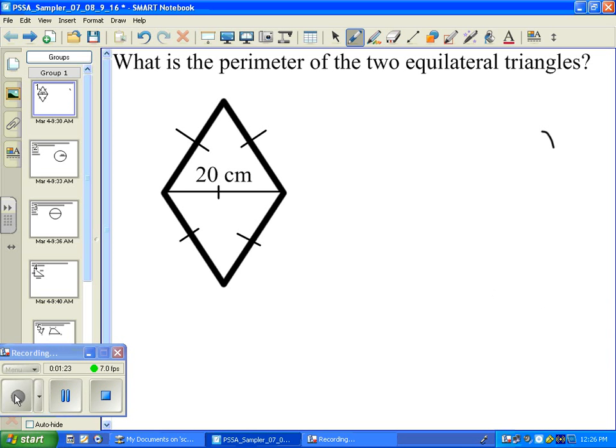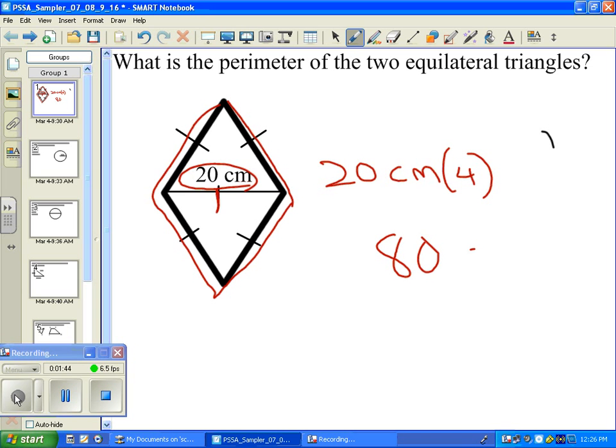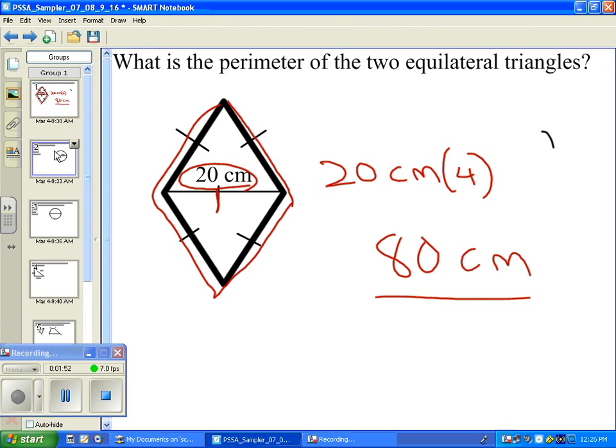Well, the perimeter would just be the outside edge of the object. And we're told that the outside edge equals this, which is 20. So it would be just simply 20 centimeters times 4, which equals 80 centimeters. Let's go on to the next one.